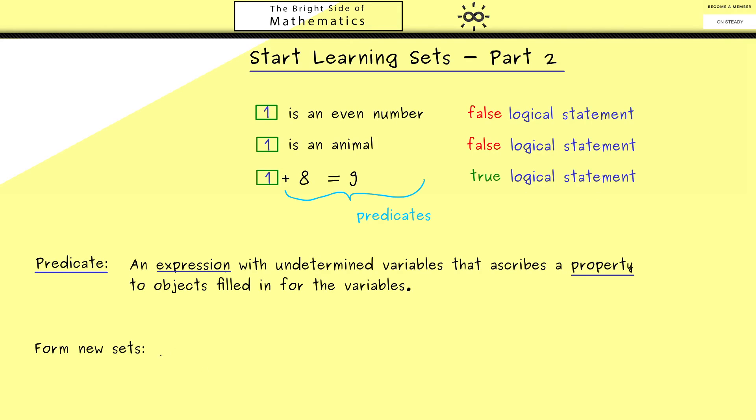Now we can talk about how to form new sets out of old sets by using predicates. We use curly brackets as set brackets, specify the variable name like x, and the old set we consider, for example the natural numbers N. Then comes a line or colon, and then a predicate which uses the chosen variable, like 'x is an even number.'